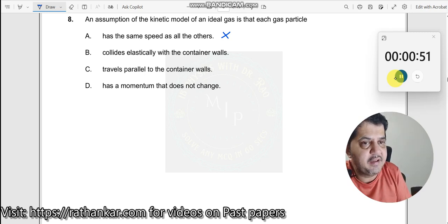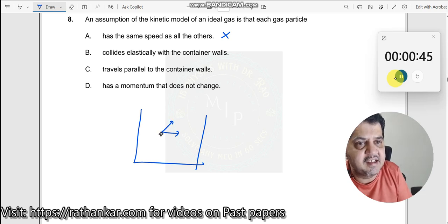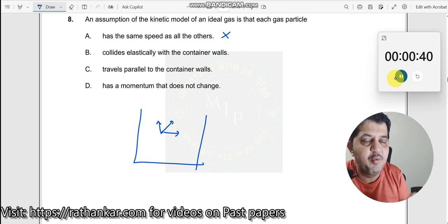Because we know that whenever we have a container and we have a gas molecule, it moves along the x-axis, it can move along the y-axis, it can move along the z-axis. In all three axes at three different speeds, they can move in random speeds, but definitely this is incorrect.